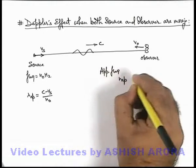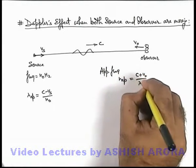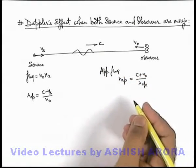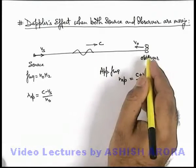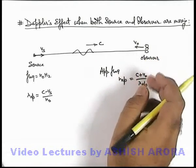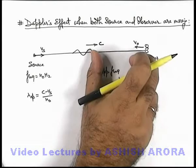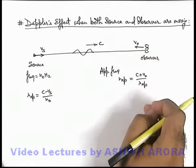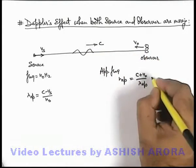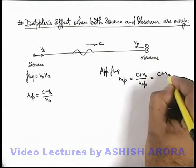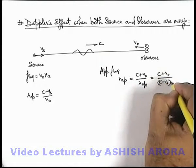can be directly written as (c + vo)/λ_apparent, because λ_apparent is the length of one oscillation which is approaching the observer. And in one second, c + vo meter length will be absorbed by the observer. So this can be written as (c + vo) divided by (c - vs)/n₀.